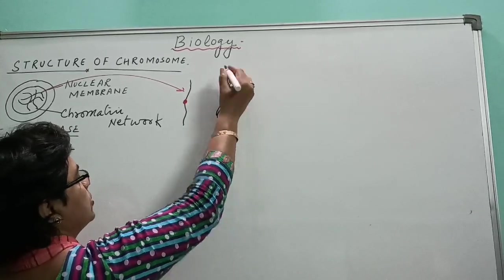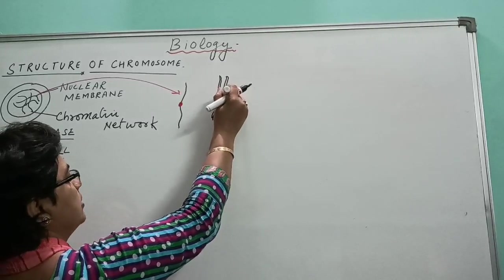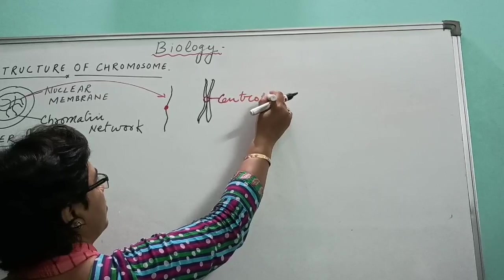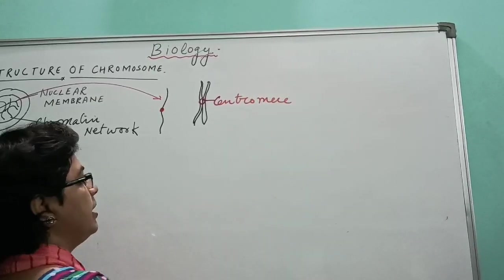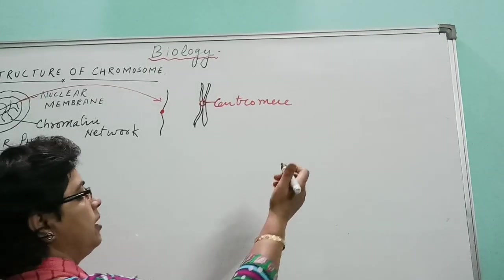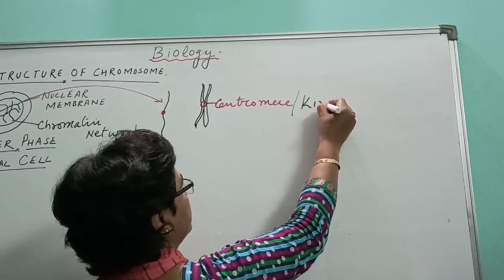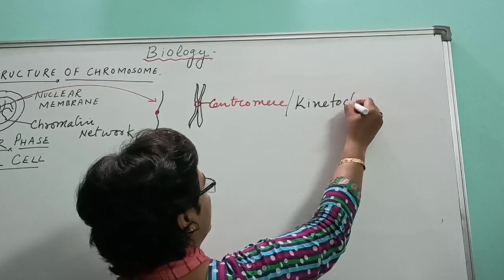Now, two sister chromatids held at the point termed as centromere. Another name of the centromere, or the same place, this one is also termed as kinetochore.